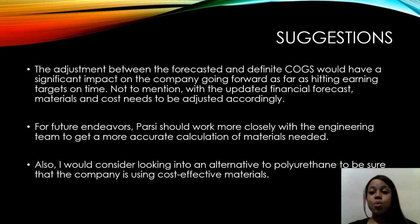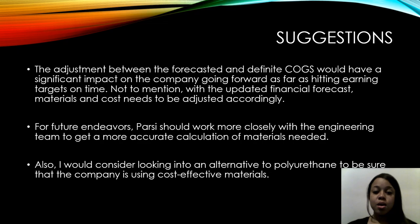The adjustment between the forecasted and actual cost of goods sold would have a significant impact on the company going forward, as far as hitting earning targets on time. With the updated financial forecast, materials and costs need to be adjusted accordingly for future endeavors. Parsi should work more closely with the engineering team to get a more accurate calculation of materials needed, and should also consider looking into an alternative to polyurethane to ensure the company is using a more cost-effective material. Thank you.